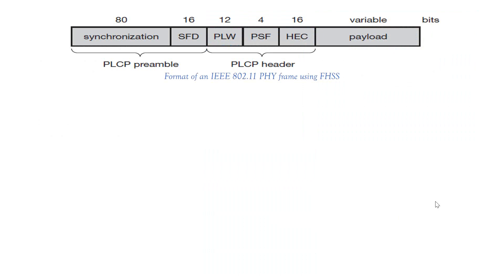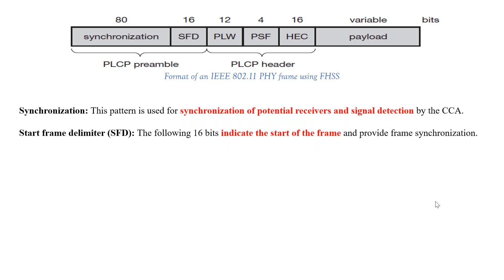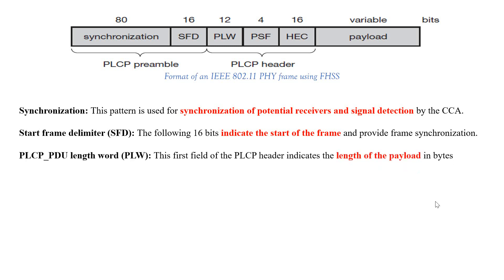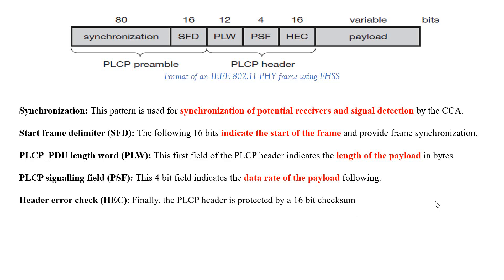The slide shows the frame format of an IEEE 802.11 physical layer frame using FHSS. The first field is synchronization, used for synchronization of potential receivers and signal reduction by the CCE. Second is the start frame delimiter, used to indicate the beginning of the frame. Next, PLW — the PLCP PDU length word — indicates the length of the payload. Fourth is the PLCP signaling field, PSF, which indicates the data rate of the payload. Finally, HEC — header error check — provides checksum values for security purposes.